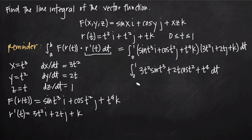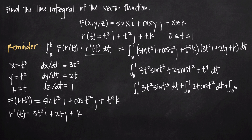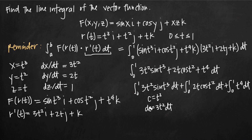We break this into three separate integrals: the integral from 0 to 1 of 3t²·sin(t³) dt, plus the integral from 0 to 1 of 2t·cos(t²) dt, plus the integral from 0 to 1 of t⁴ dt. The first two require u-substitution. Since we need two substitutions, we'll use variables c and d. Let c = t³, so dc = 3t²·dt. Let d = t², so dd = 2t·dt.